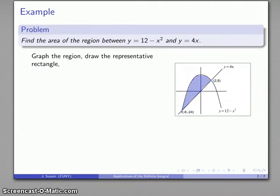We'll sketch a representative rectangle and find the height of that rectangle. The height is always top minus bottom. So here the top is the curve 12 minus x squared, the bottom is y equals 4x, so top minus bottom: 12 minus x squared minus 4x.